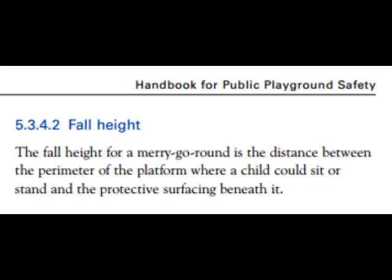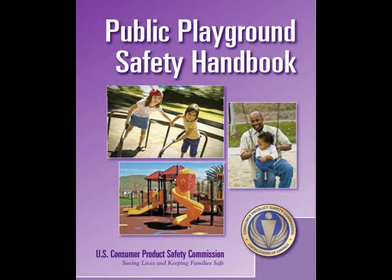The rotating platform of a merry-go-round should not have any sharp edges. A means should be provided to limit the peripheral speed of rotation to a maximum of 13 feet per second. Merry-go-round platforms should not have any up and down oscillatory motion. Under use zone section 5.3.4.1, the use zone should extend a minimum of 6 feet beyond the perimeter of the platform. The use zone may not overlap other use zones unless the rotating equipment is less than 20 inches in diameter and the adjacent equipment allows overlap. Section 5.3.4.2, the hull height. The hull height for a merry-go-round is the distance between the perimeter of the platform where a child could sit or stand and the protective surfacing beneath it. This is taken from the Public Playground Safety Handbook, U.S. Consumer Product Safety Commission, online at cpsc.gov.